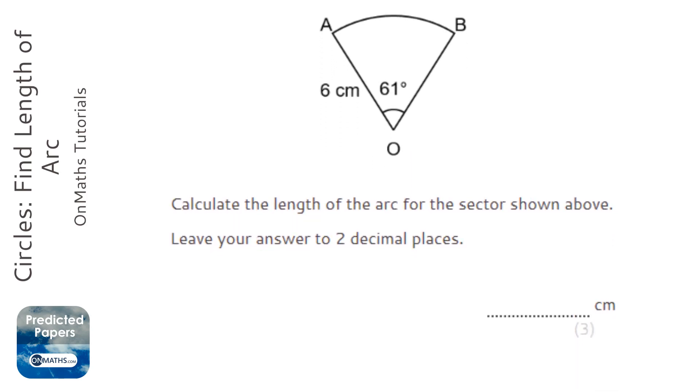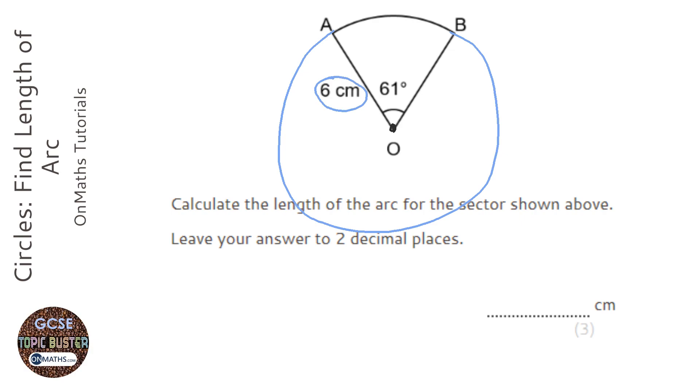OK, so the first thing we need to realize is we've got a bit of a circle, and the whole circle looks something like this. And we've got the radius of the circle, because that goes to the center, which is 6 centimeters.